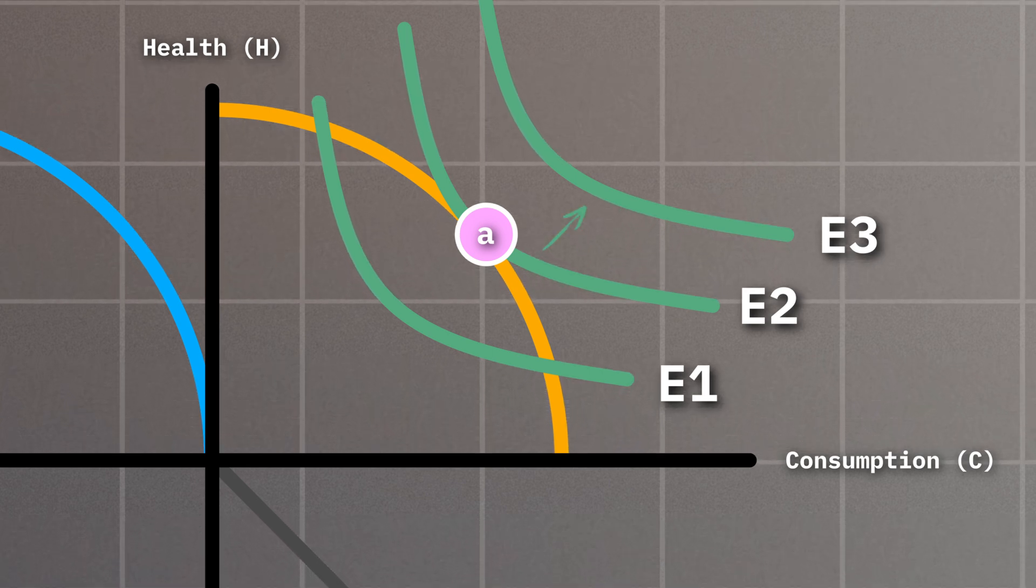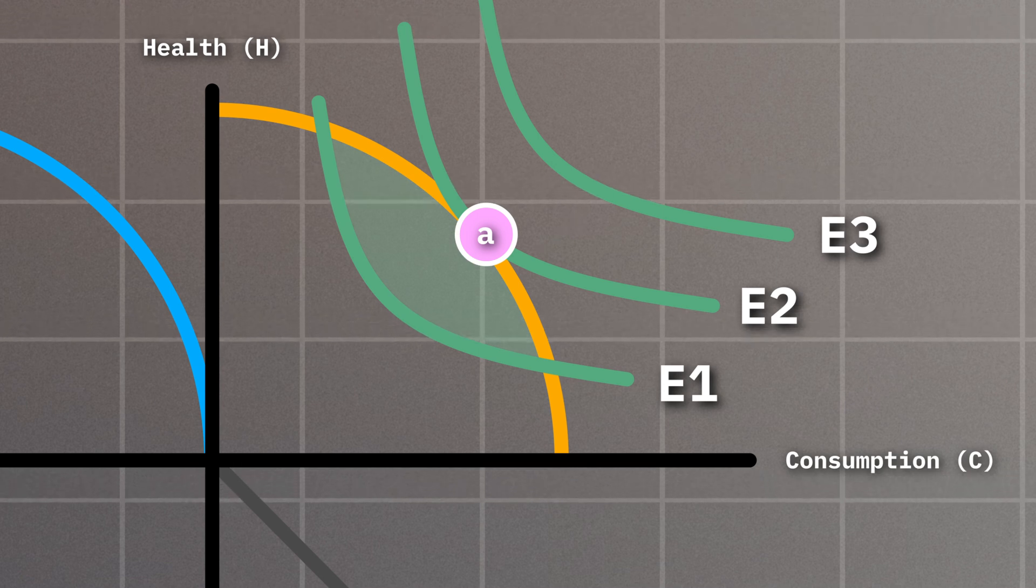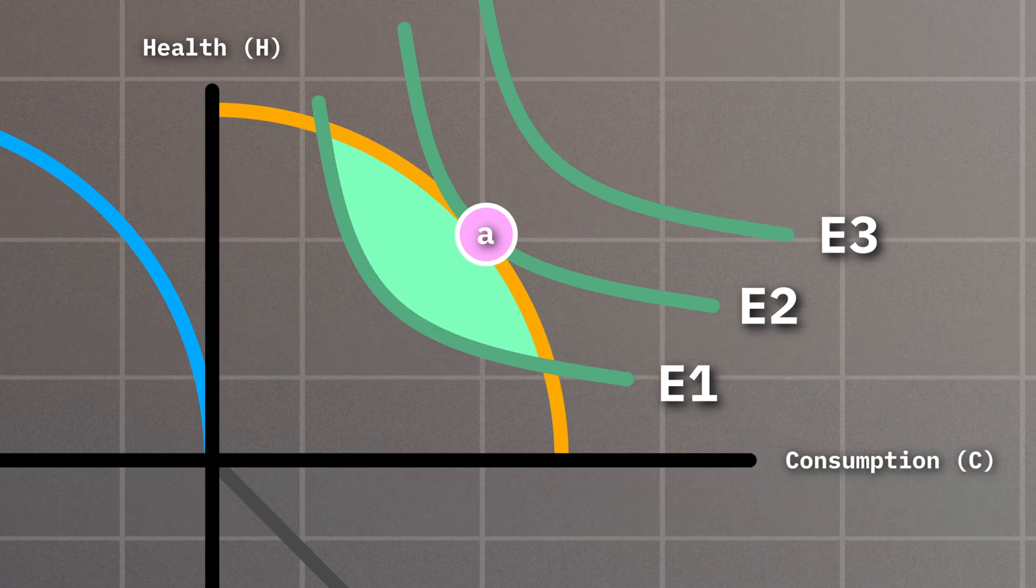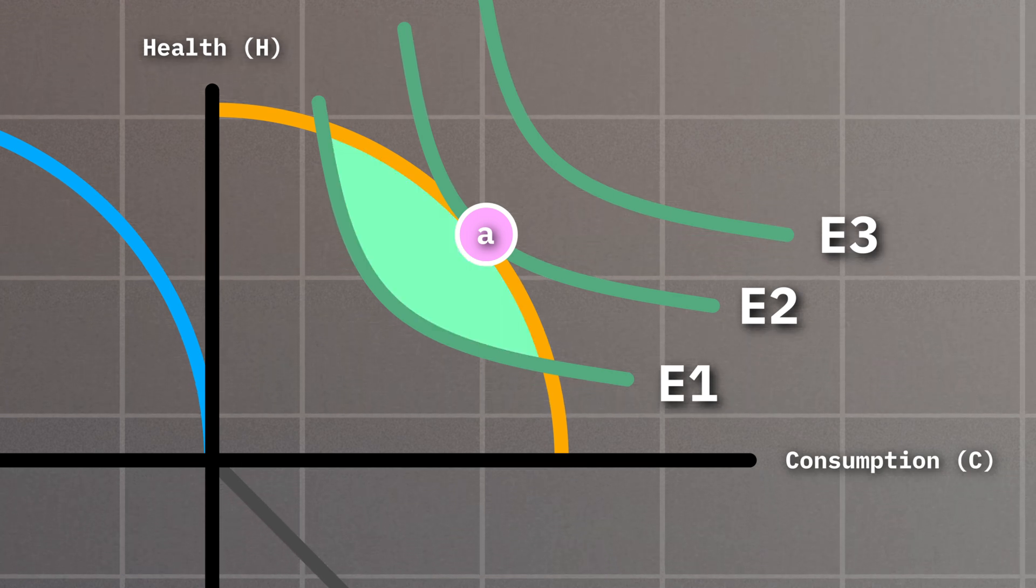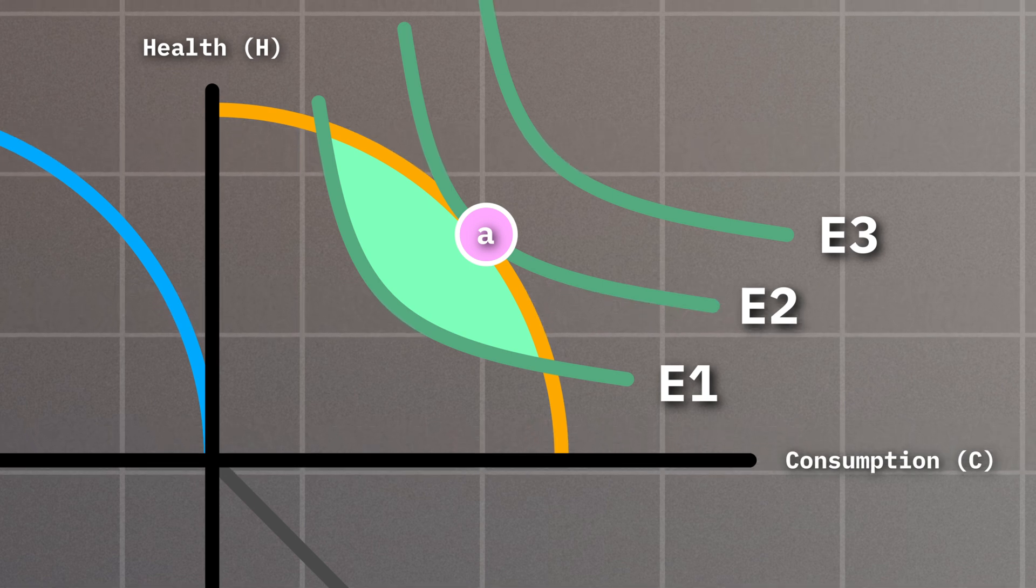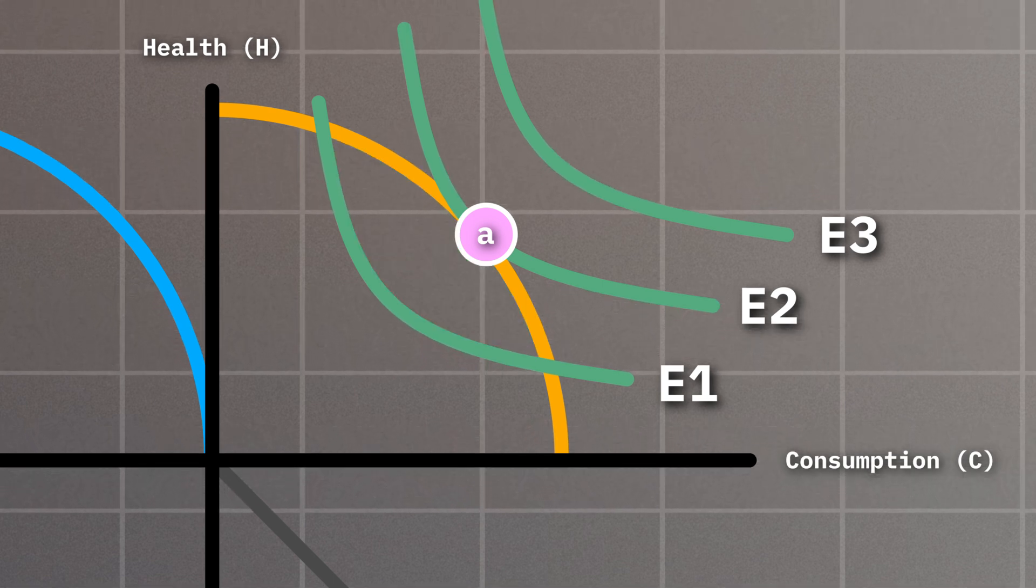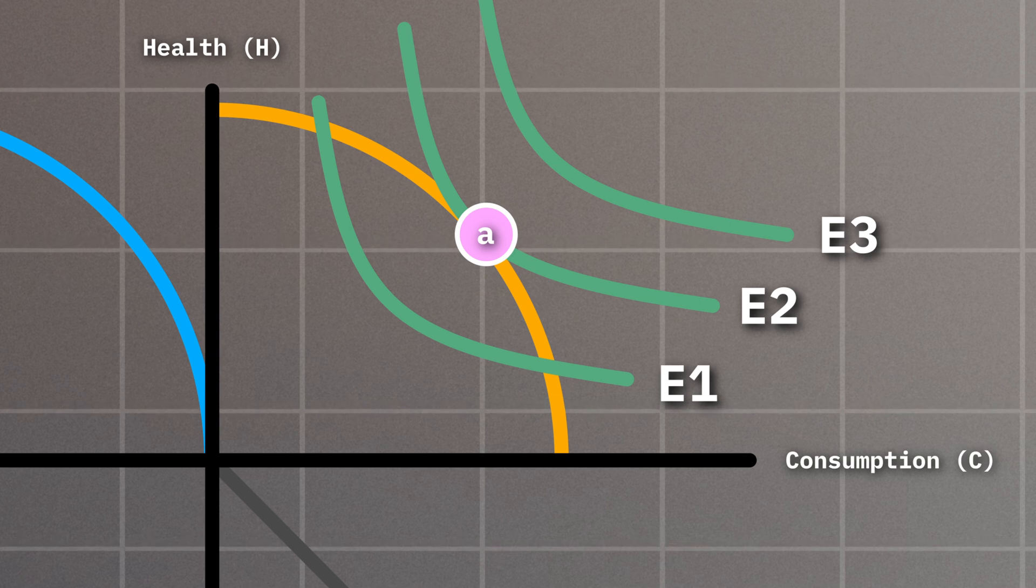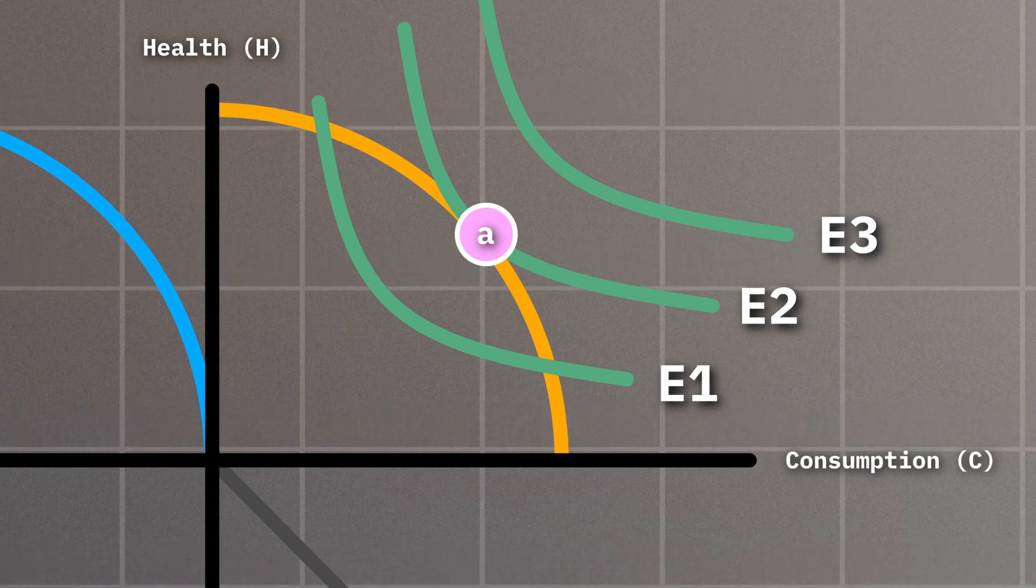We can't go beyond our frontier and pick a point on E3, and it would not be optimal to pick a point left to our frontier on E1, as we want to get as much health and consumption as possible. That's why point A, where the indifference curve E2 is tangent to the frontier, is the optimal solution.